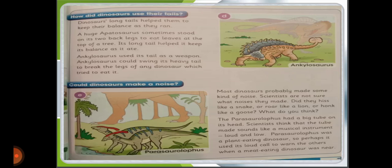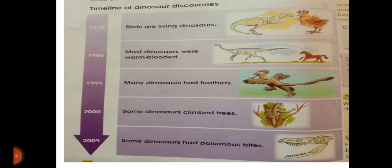These are explanations about different kinds of dinosaurs. Timeline of dinosaurs' discoveries: In 1973, birds are living dinosaurs. In 1986, most dinosaurs were warm-blooded. In 1999, many dinosaurs had feathers. In 2000, some dinosaurs climbed trees. In 2009, some dinosaurs had poisonous bites.